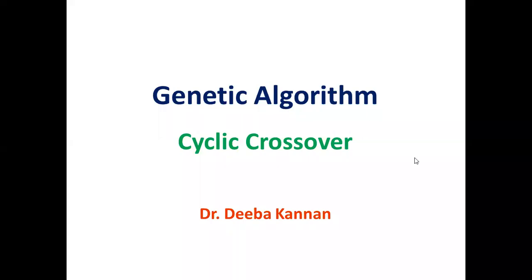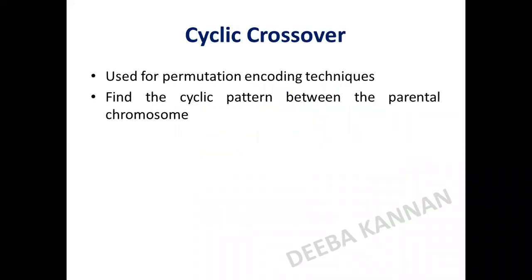In this video we're going to discuss cyclic crossover. Cyclic crossover is a type of crossover used for permutation encoded strings, meaning the genes in a single chromosome should not be repeated, and the length of the chromosome remains the same.